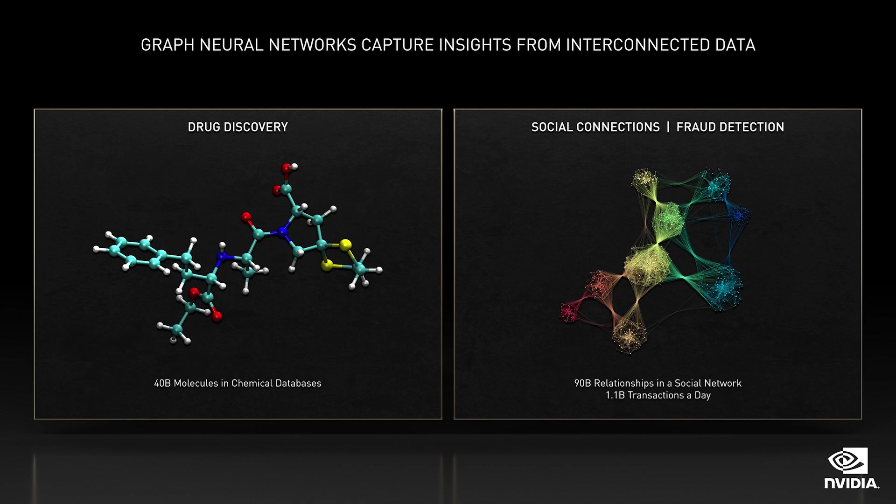Let's talk about building AI models and systems. Graphs are the native format, the most natural data structure of the world's data. Whereas CNNs learn from spatial data and RNNs learn sequences, graph neural networks can learn relationships — how molecules connect in a protein, how people are connected in a social graph, how roads are connected to cities — all can be described as a graph.